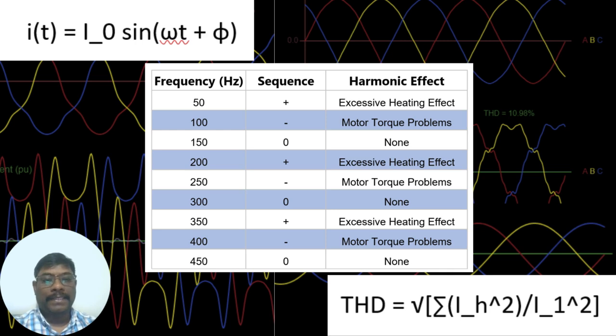The fifth harmonic is the negative sequence effect and it also causes similar to the second harmonic, basically motor torque problems. If you see the seventh harmonic, eighth harmonic, in this way, in general if you see the positive sequence harmonics produce the excessive heating effect in the power system.